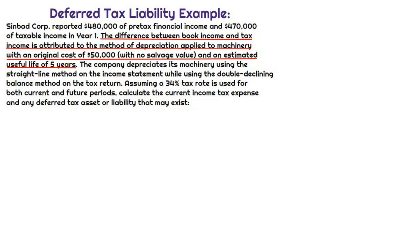and an estimated useful life of five years. The company depreciated the machinery using the straight-line method on the income statement while using the double declining balance method on the tax return. Maybe they wanted to accelerate the depreciation, take a greater expense, and lower that taxable income amount this year. We're going to assume a 34% tax rate used for both the current and future period, and we'll calculate the current income tax expense and any deferred tax asset or liability.